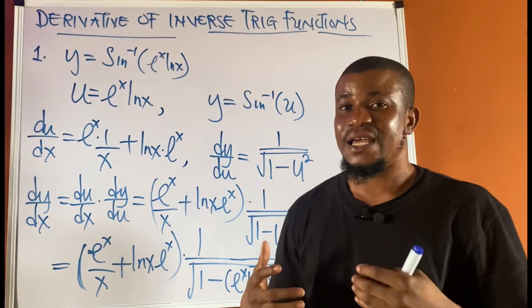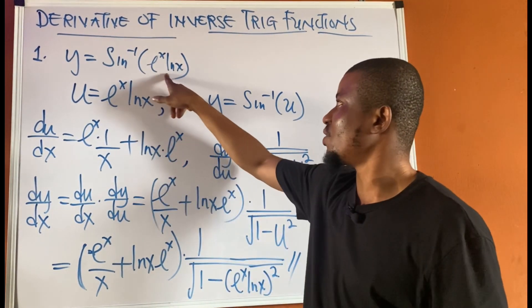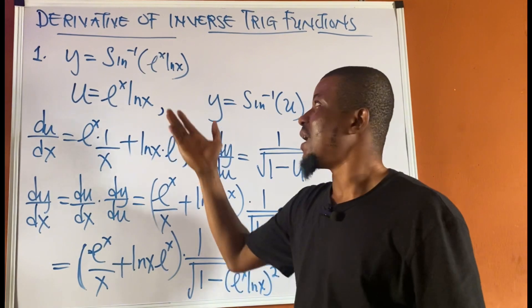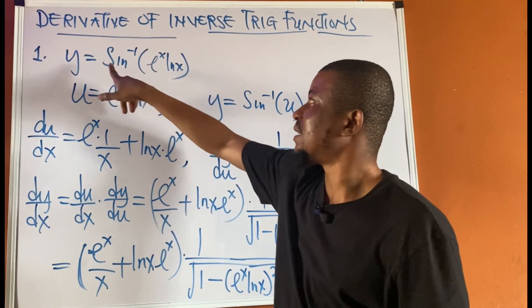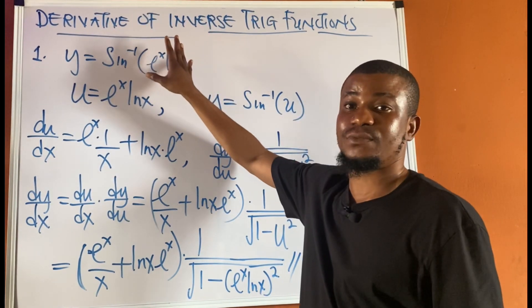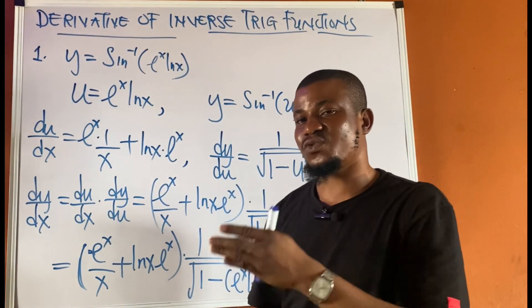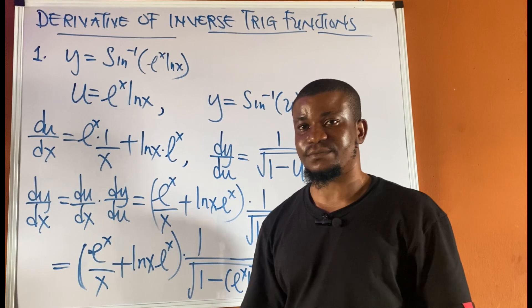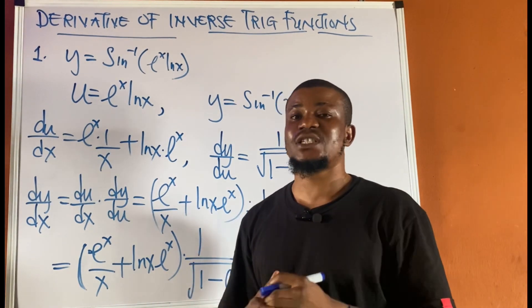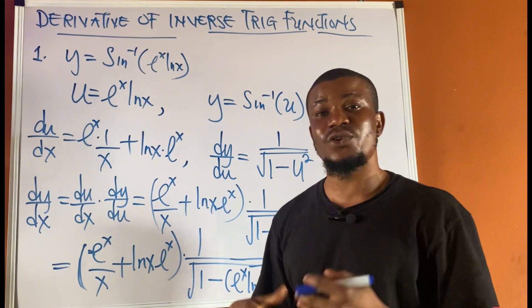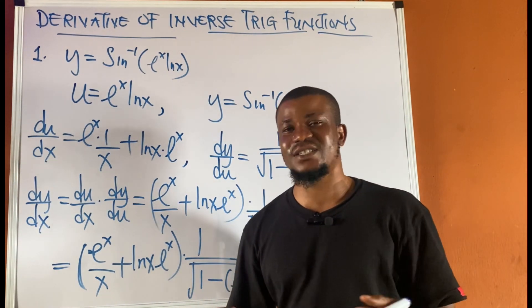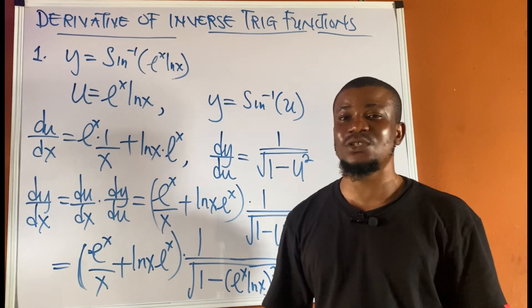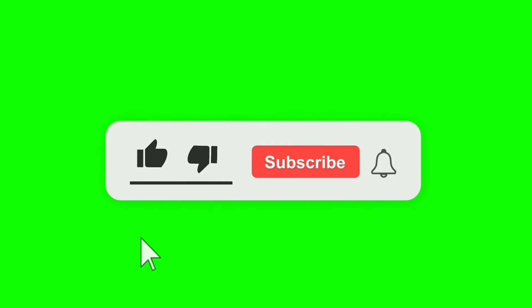This is how we differentiate inverse trig functions. If you have a division of functions, simply apply the quotient rule, differentiate that, then multiply by the derivative of sine inverse of u, which is 1 upon square root of 1 minus u squared. If you haven't subscribed to this channel, kindly subscribe so you get notifications when new videos are uploaded. Thank you.